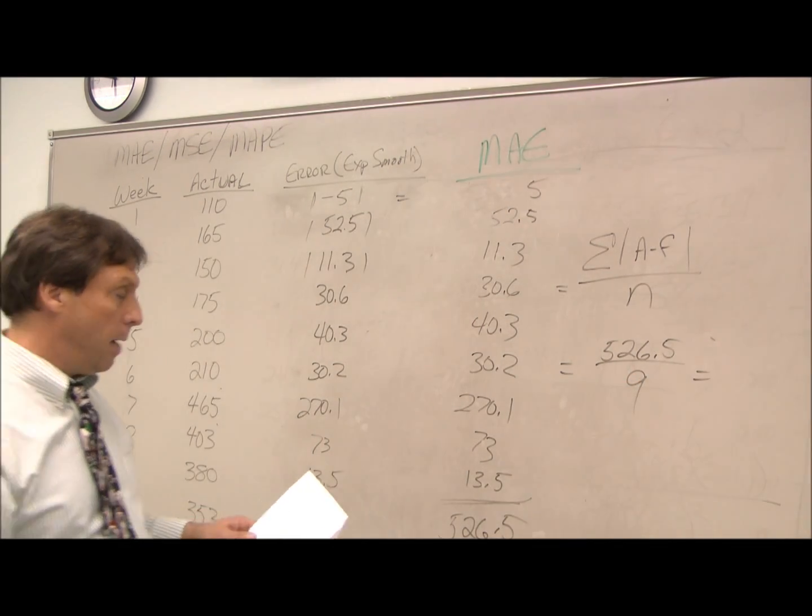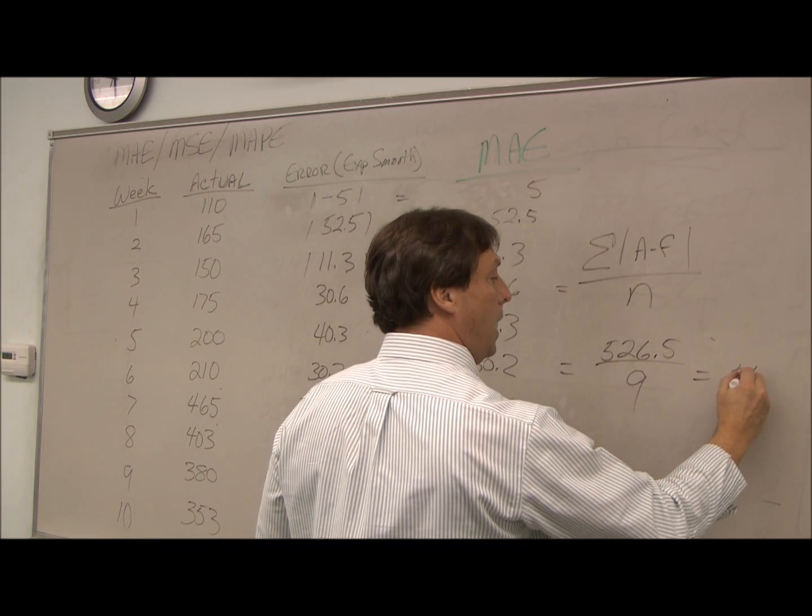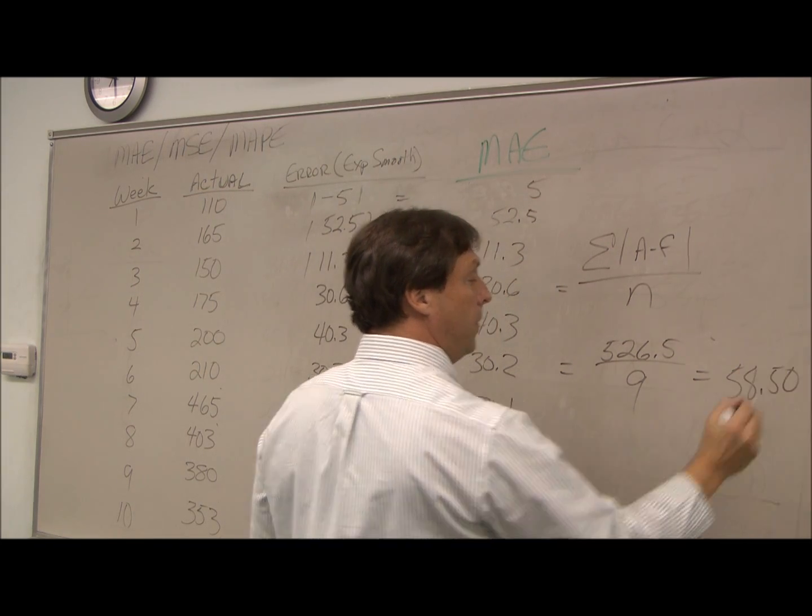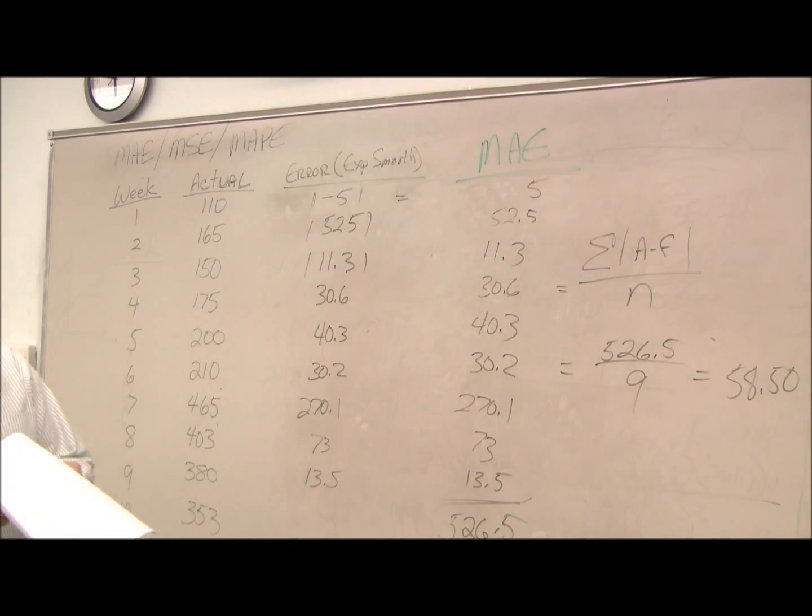So my mean absolute error comes out to 58.5. This number by itself, usually companies will have a bracket that they want to keep their error within for their accurate forecast. Very useful for comparing year over year results.